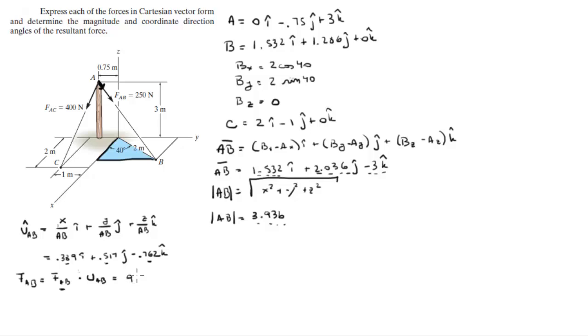So you're going to get that it's equal to 97.3i plus 129.3j minus 190.7k, and this is for vector AB.